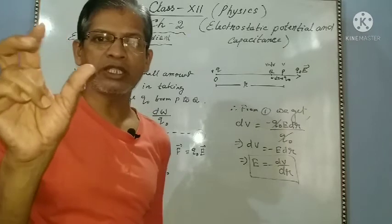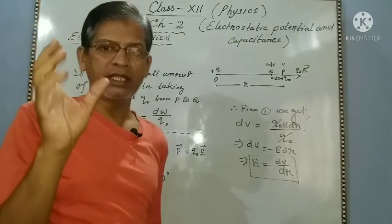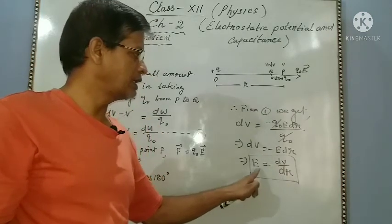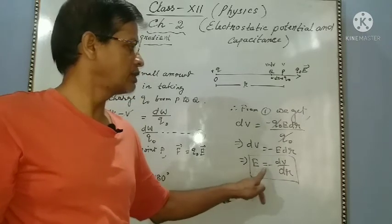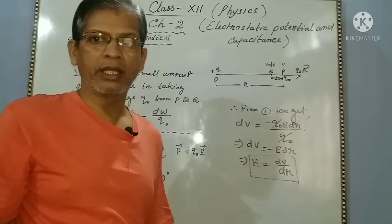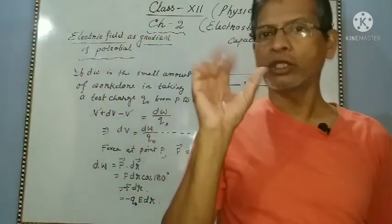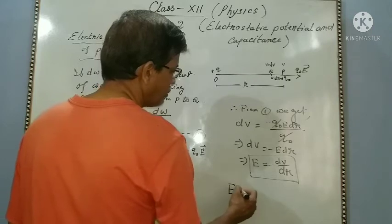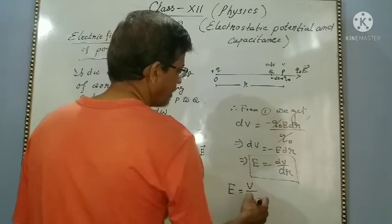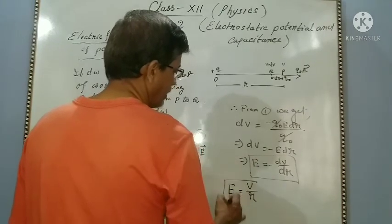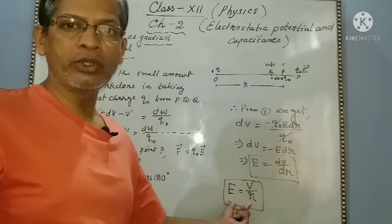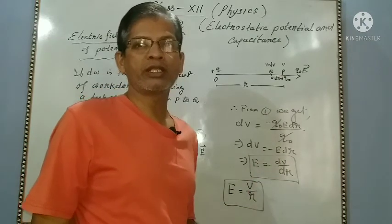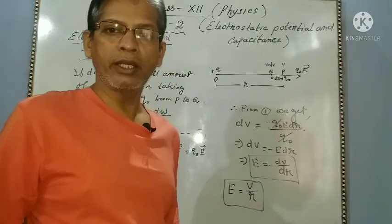The quantity dV by dr is called the potential gradient — the change in potential per unit length. The potential gradient is related to the electric field: E equal to minus dV by dr. When the electric field is not uniform, use this relation E equal to minus dV by dr. When the electric field is uniform, use E equal to V by d or V by r.